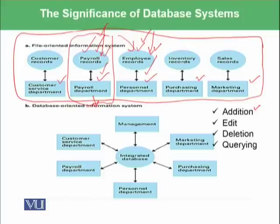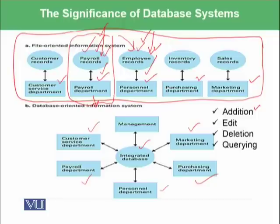However, the database-oriented information system is fully aggregated. We have the marketing department, purchasing department, personal department, payroll department, and customer service department — all integrated into one place, called the integrated database, which also has a management component that manages the database.